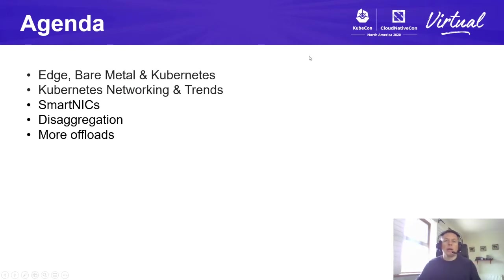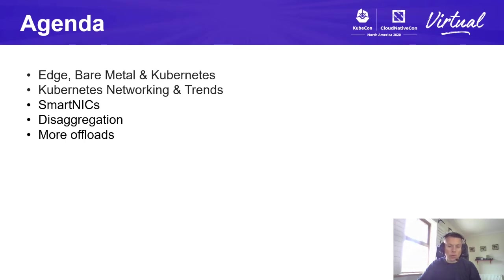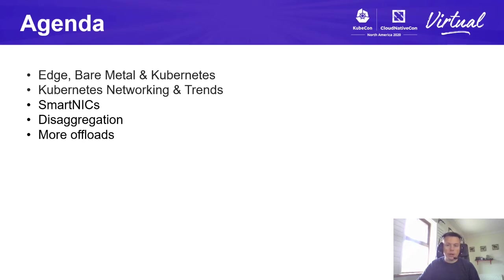For today's agenda, I'm going to talk about the edge, bare metal deployments as a deployment target for the edge, and Kubernetes. Then we'll cover the Kubernetes networking model — the simple requirements inherent in Kubernetes from a networking perspective, and some of the trends we've seen as new industries onboard to the Kubernetes platform. We'll then discuss SmartNICs, their categorizations, disaggregation, and offload techniques.